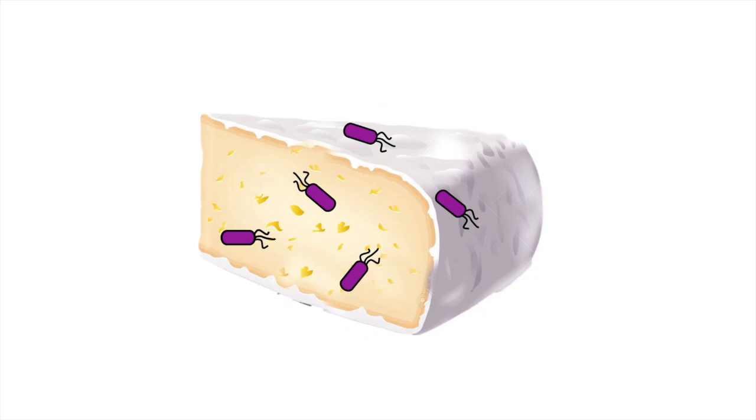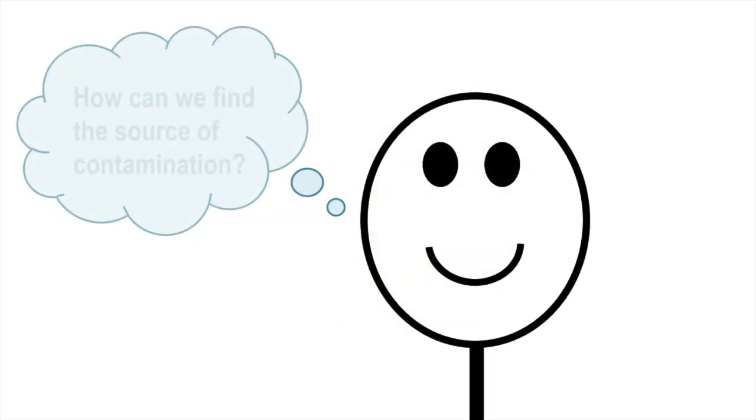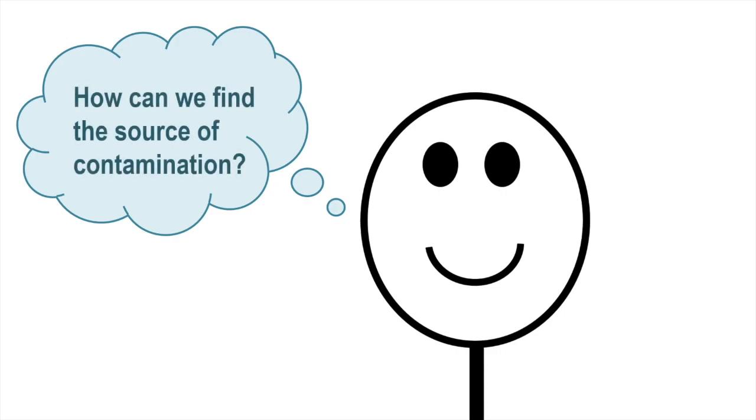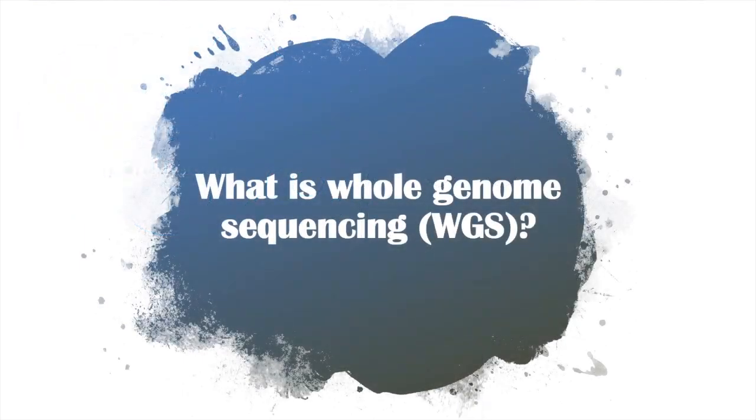As a food producer, it is important to make sure pathogens like listeria don't end up in your ready-to-eat food products. What can we do to find the source of contamination if a pathogen ends up in a food product? Is the bacteria coming from ingredients or our facility environment? A relatively novel way of tracking foodborne pathogens is by using whole genome sequencing.